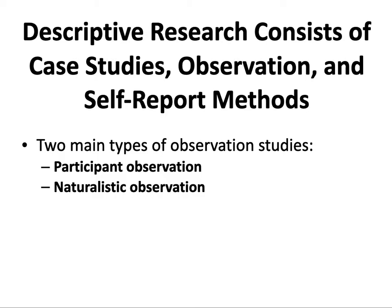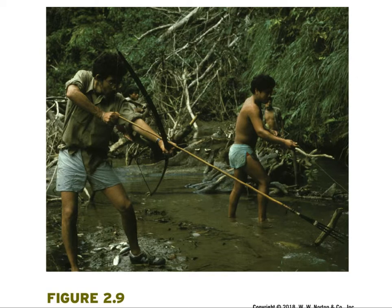There are two main types of observation studies: participant and naturalistic. Participant observation is a type of descriptive study in which the researcher is involved in the situation. An example is evolutionary psychologist Lawrence Sugiyama, who conducted fieldwork in Ecuadorian Amazonia among the Shiwiar-Zaparo peoples, hunting with a bow and arrow — a particularly active form of participant observation.